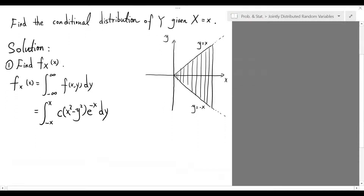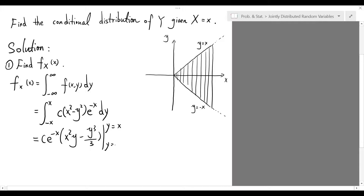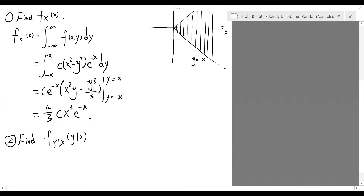The antiderivative with respect to y is given by C times e to the negative x times x squared times y minus y cubed divided by 3. We evaluate this expression at x and negative x. After substitution and simplification, we end up with 4 over 3 times C times x cubed times e to the negative x as the marginal density of X.